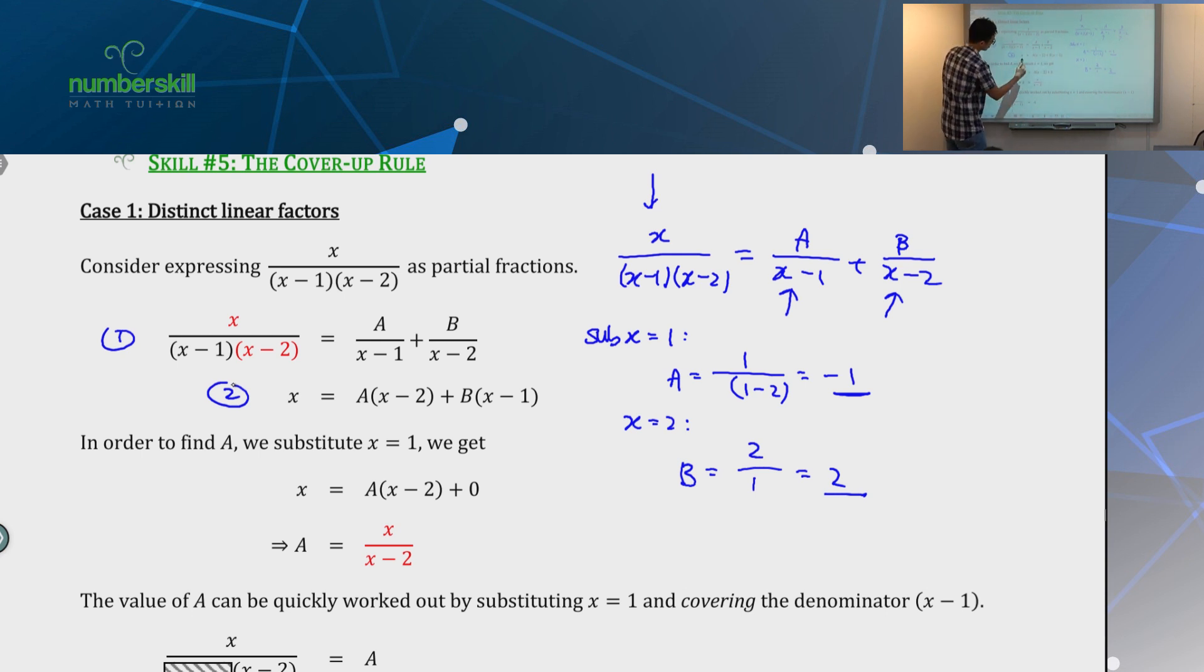Now, if you look at this, think about it. If you want to find A, how do you do that? Well, you make B disappear. How do you make B disappear? You substitute x equal to 1. So, you substitute x equal to 1, the B will be gone. So, if B is gone now, look at this.